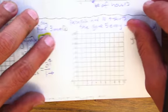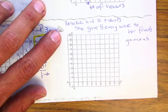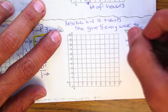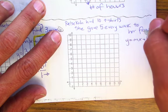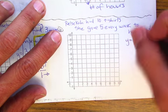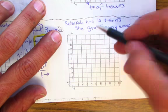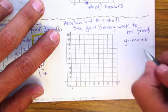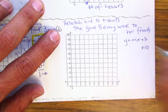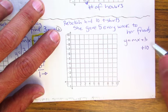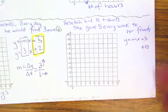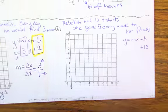The next one. Rebecca. Rebecca had 10 t-shirts. She gave 5 every week to her friends. She gave 5 every week. So that's your m. 5 every week. That's what's changing from the 10. So where do we start off with? 10. Okay? So 10 we start off with. That's your b. Alright?